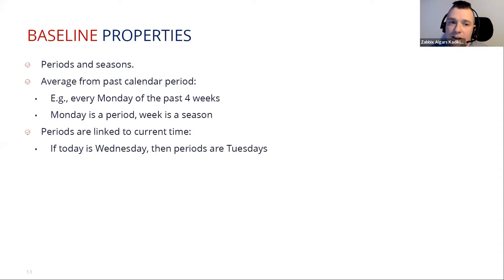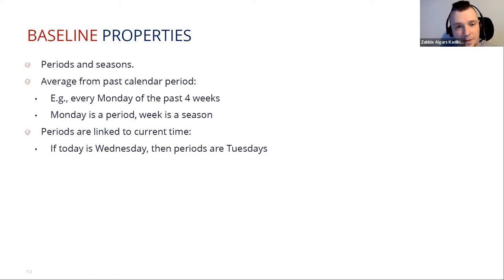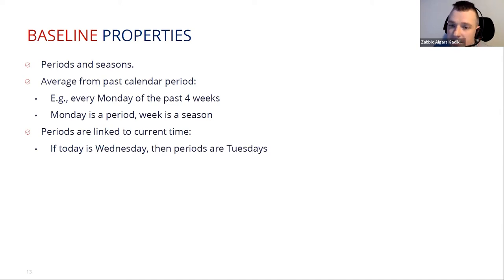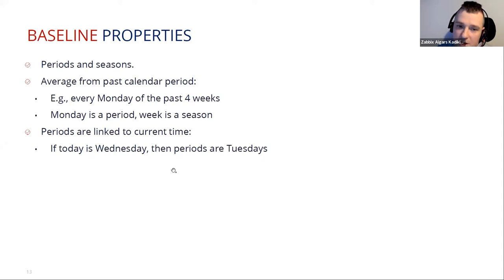The periods are linked to current time. When we use the function, it is attached to the past period, never to today. For example, if today is Wednesday, then the periods being analyzed are Tuesdays. There's a graph coming up that describes this relation more clearly. Average from past calendar periods — for example, every Monday of the past four weeks. Monday is a period, week is a season. In Zabbix, two new functions have been developed for baseline monitoring to provide convenience for the user.